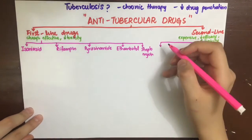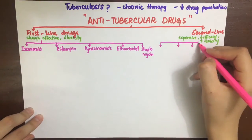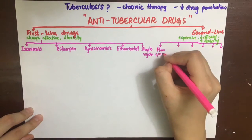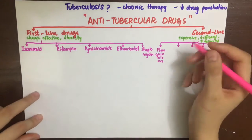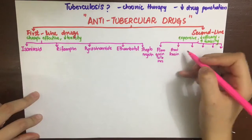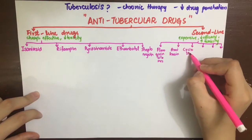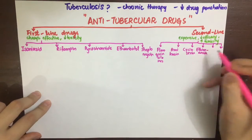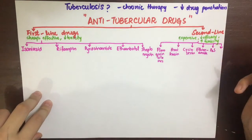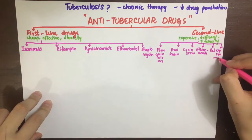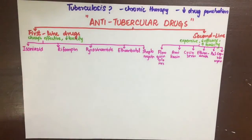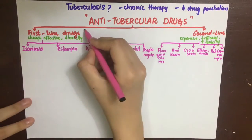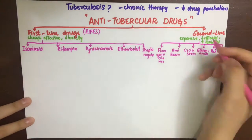The second-line anti-tubercular drugs are used after the first line doesn't work; they are expensive, not as effective, and have increased toxicity. They include fluoroquinolones, amikacin, cycloserine, ethionamide, para-aminosalicylic acid, and capreomycin.